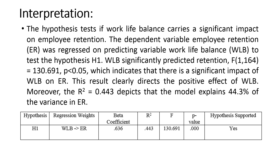We have to consider the beta coefficient value, R square value, F value, and P value. Since the P value is 0.000, which is less than 0.05, the result is statistically significant — there is a significant impact of work-life balance on employee retention, and 44.3 percentage of the variance is explained. This is how we write the interpretation.